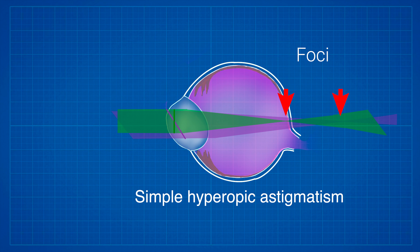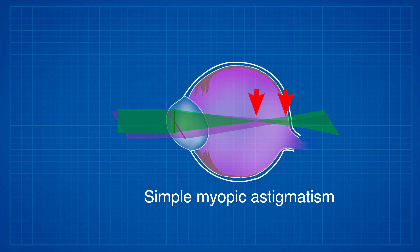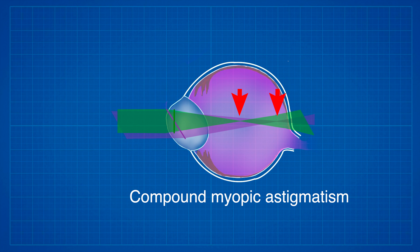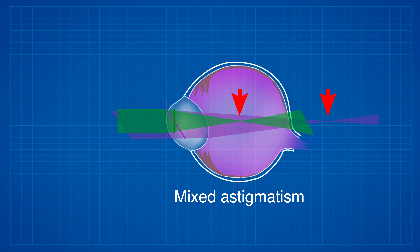We know that if an eye has myopia, it can't have hyperopia as well, and vice versa. But astigmatism can co-exist with these refractive errors, so you can have myopic astigmatism and hyperopic astigmatism. In fact, there are 5 different combinations you can make with these three options: number 1, simple hyperopic astigmatism; number 2, simple myopic astigmatism; compound hyperopic astigmatism; compound myopic astigmatism; and lastly, mixed astigmatism.